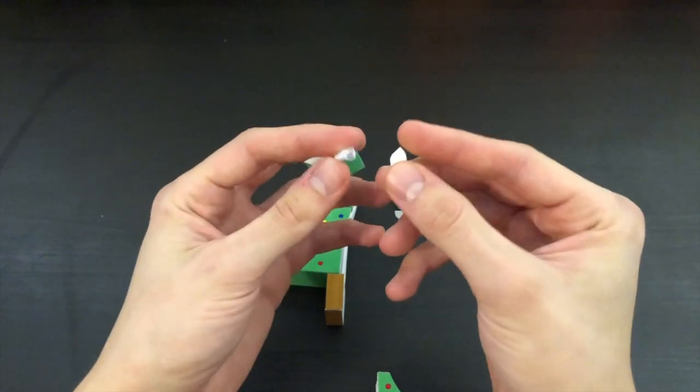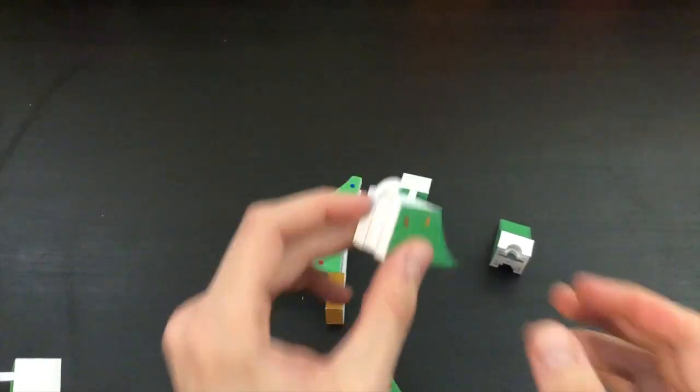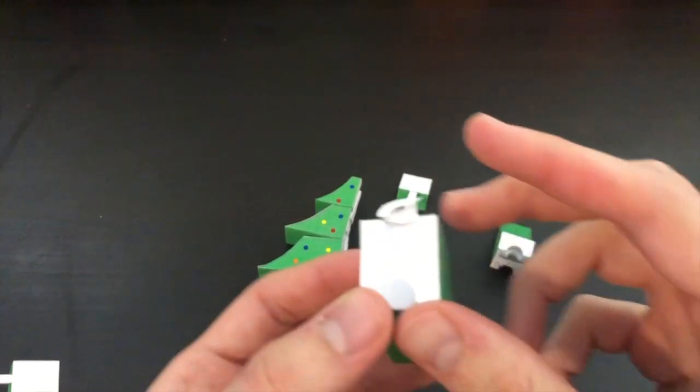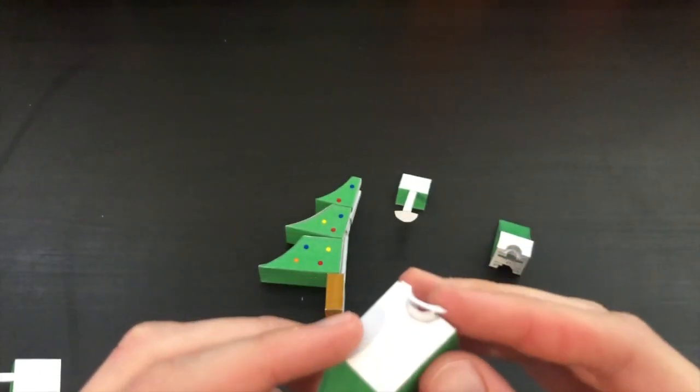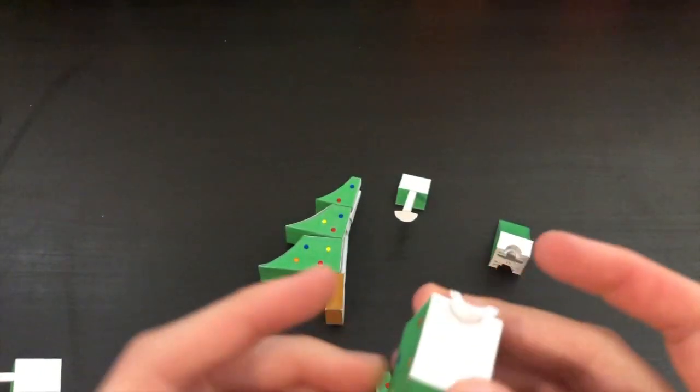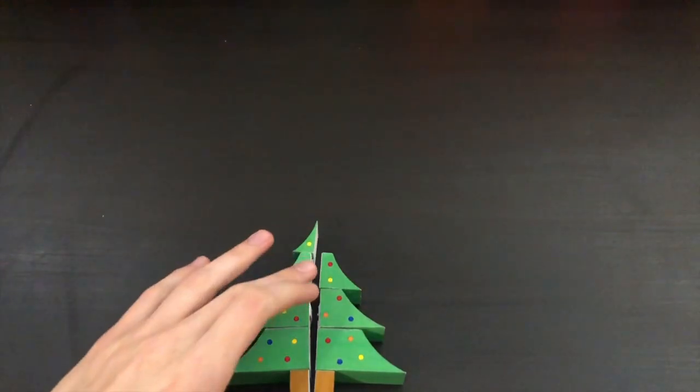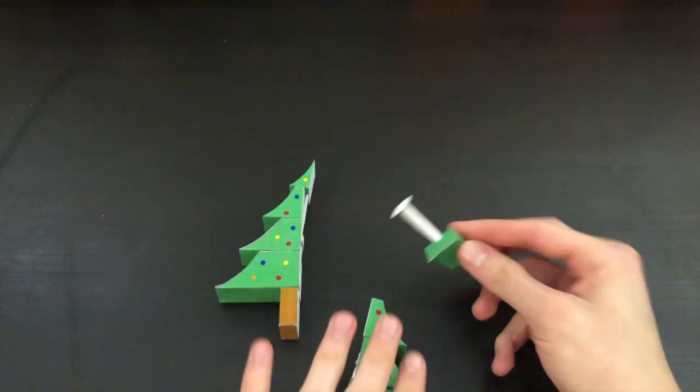I'm gonna go ahead and crazy glue this back on. One more thing to sort of show exactly how fragile this is, looks like this is falling off as well. I'm gonna put that right back on and crazy glue that on as well. All right, so here I crazy glued the last piece on as well as another piece.